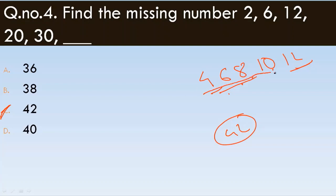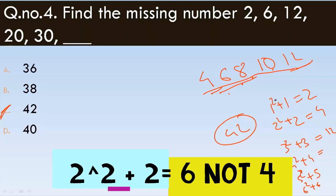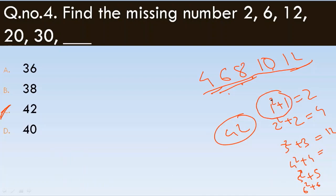For a similar approach using a formula: the sequence follows n squared plus n. So 1 squared plus 1 equals 2, 2 squared plus 2 equals 6, 3 squared plus 3 equals 12, 4 squared plus 4 equals 20, 5 squared plus 5 equals 30, 6 squared plus 6 equals 42. So 42 is the correct answer.